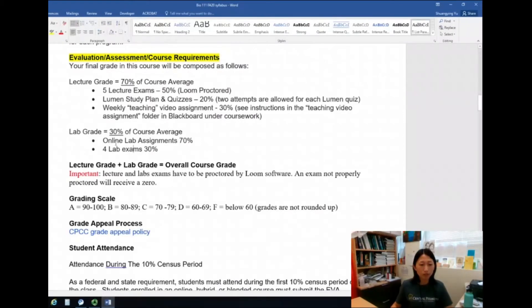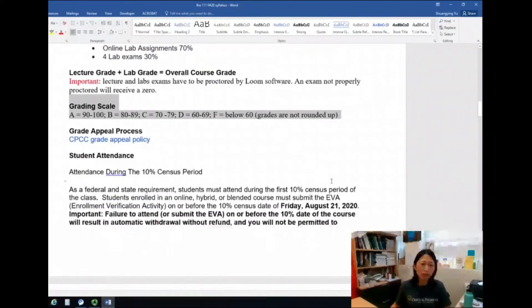For lab grade, again, I really have reduced the percentage for exams. So I want you to focus on going through the digital labs and learn something from that. And then you don't have to worry too much about memorizing things so that you're prepared for the exams. I want you to learn and not necessarily memorize things. So the four lab exams only accounts for 30 percent. I may have some other assignments for you, but right now it's really just the lab activities through the digital labs, through e-science, and then just the four lab exams. So same thing here. Lab exams also need to be proctored or recorded using Loom. Grading scale is the same probably for most of the classes.